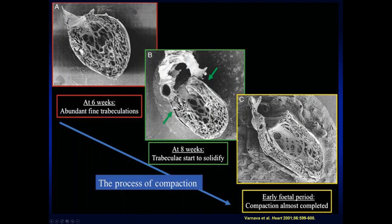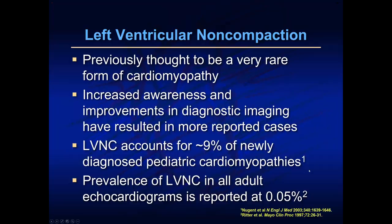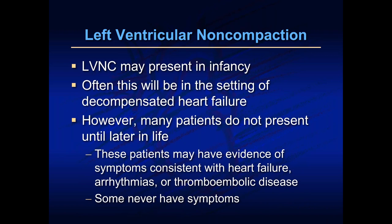This depicts the fungiform or honeycombing appearance: at six weeks you have many trabeculations, and you can appreciate those decreasing closer to eight weeks, until at the end of the fetal period all those honeycombing appearances are gone and the normal myocardium looks smooth. LVNC was previously thought to be very rare, but increased awareness and improvements in imaging have resulted in more cases being reported. LVNC accounts for about 9% of newly diagnosed pediatric cardiomyopathies, and its prevalence in all adult echocardiograms is about 0.05%.